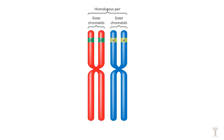In this diagram we can see two chromosomes. The red one came from our mom and the blue one came from our dad. Those chromosomes that come from each parent are called homologous chromosomes. When DNA replicates we form sister chromatids. The replicated chromosomes are always going to be the same, but homologous chromosomes could be different.